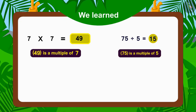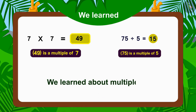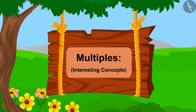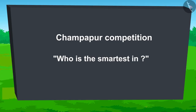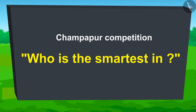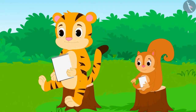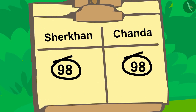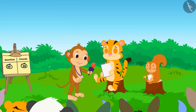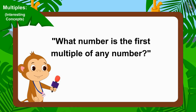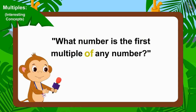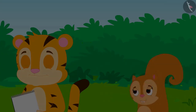Hello children! In the last video we learned about multiples through some fun examples. In this video we will learn about some interesting concepts related to this. The competition — who is the smartest in Champapur — is going on. Sheer Khan and Chanda have reached the last round and both their scores are equal. The organizer of the competition, Babban, now posed this question in front of them: what number is the first multiple of any number?